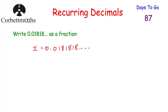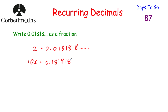We want to multiply so that we get just the recurring part after the decimal point. Notice that the 0 doesn't recur — it's just the 1, 8, 1, 8 that recurs. So I'm going to multiply by 10, which moves all the digits one column to the left. So 10x equals 0.181818... and so on. That's fantastic — we've got a decimal number with just the recurring bit after the decimal point.